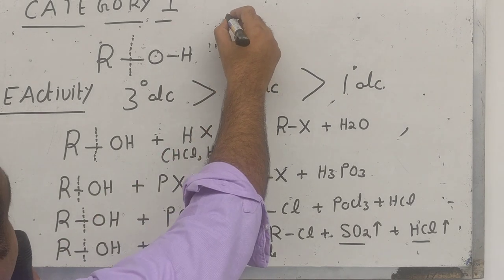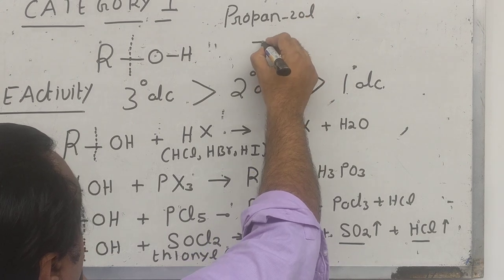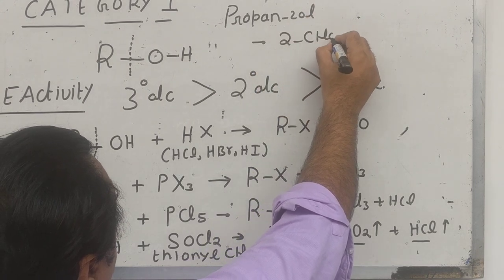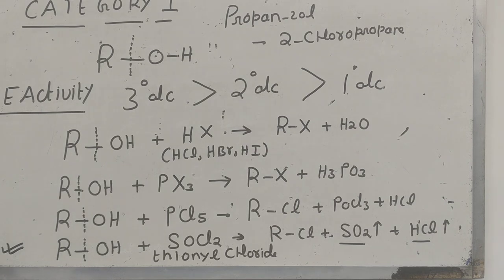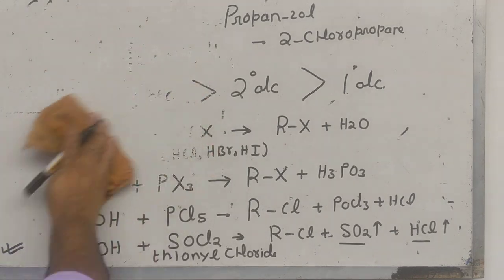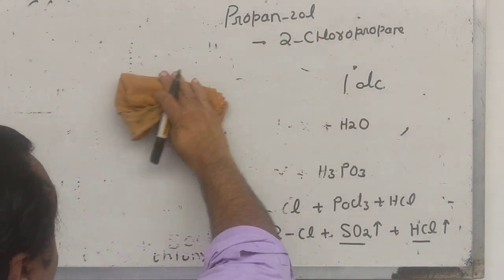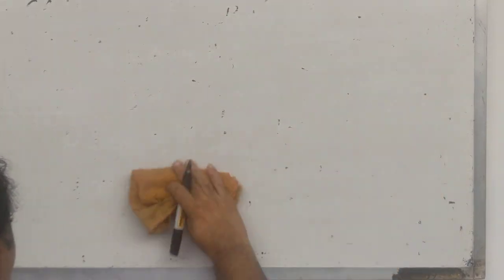For practice, you can try converting propan-2-ol into 2-chloropropane. Looking at the structure, OH has to be replaced by Cl. For this, use thionyl chloride SOCl2, which gives neat and clean products. React propan-2-ol with SOCl2 and the net result is OH replaced by Cl to give 2-chloropropane. The mechanism for this reaction goes through carbocation formation, but it is not required in the CBSE syllabus.